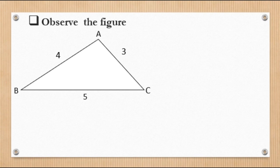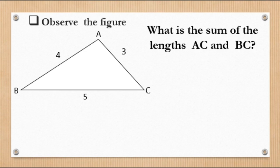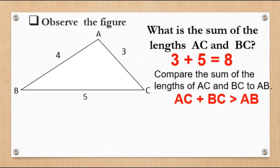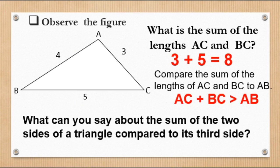Comparing AB plus BC to AC: AB plus BC is greater than AC, since 9 is greater than 3. Next, same illustration: AC is 3 and BC is 5, so the sum of AC and BC is 8. Comparing AC plus BC to AB: AC plus BC is greater than AB, since 8 is greater than 4. Therefore, the sum of the lengths of any two sides of a triangle is greater than the length of the third side.